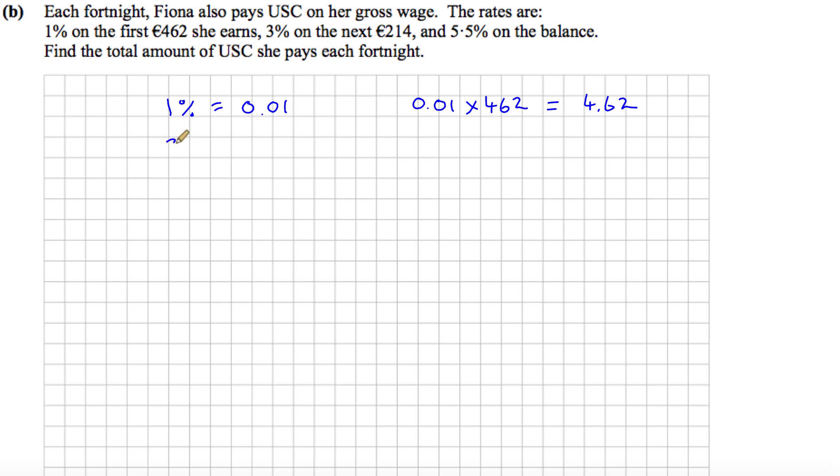She then earns 3% on the next €214. So 3% as a decimal is 0.03. Divide 3 by 100 to get that. And we're trying to find 3% of the next €214. So when we do that in our calculator, we get €6.42.